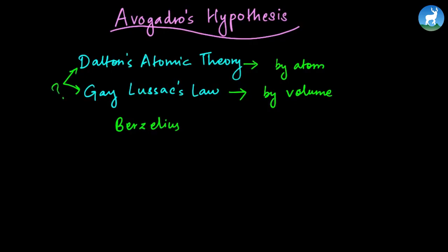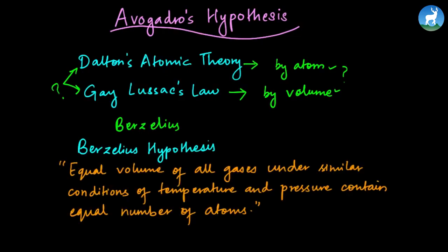So what do we need to do? This atom or volume should be used to correlate how we should study. This is a hypothesis. We need to establish the hypothesis. The first is Berzelius hypothesis. This is the hypothesis statement: equal volume of all gases under similar condition of temperature and pressure contain equal number of atoms.